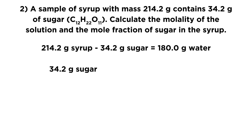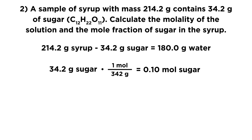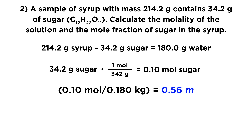Now we get the moles of solute. We take 34.2 grams of sugar and multiply by 1 mole over 342 grams — the molar mass of sucrose, from 12 carbons, 22 hydrogens, and 11 oxygens — giving 0.1 moles of sugar. Then 0.1 moles of solute over 0.18 kilograms of solvent gives us a 0.56 molal solution.